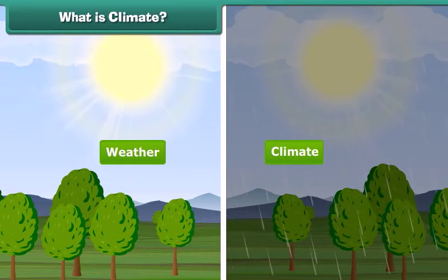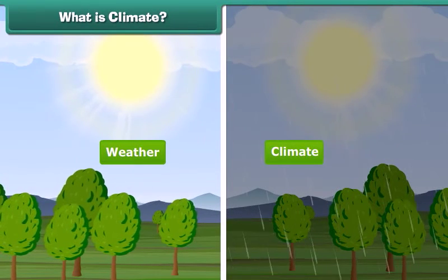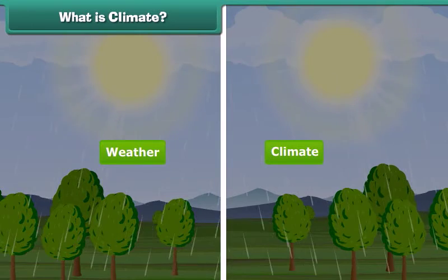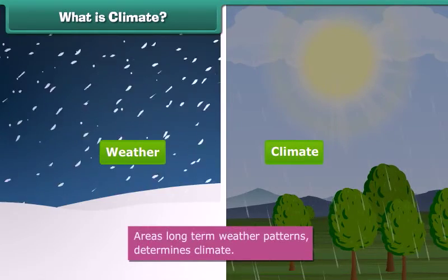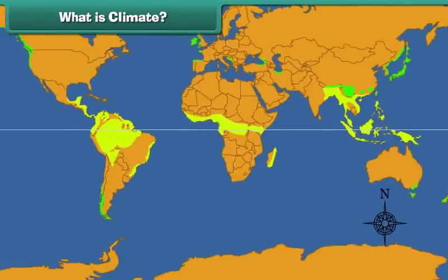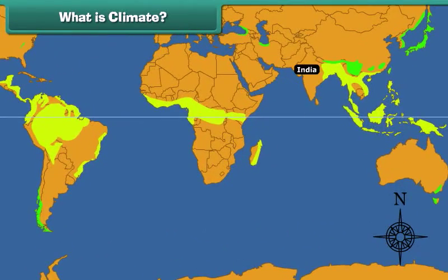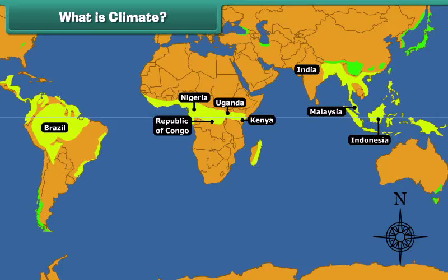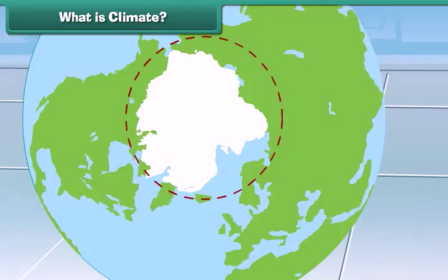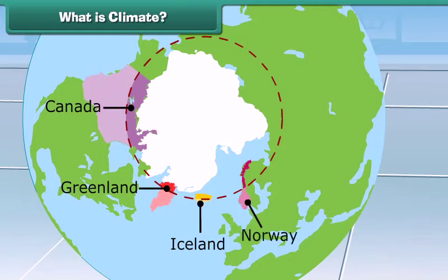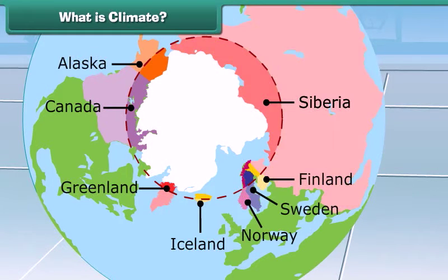Is weather and climate the same? No. An area's long-term weather patterns determine climate. For example, areas near the equator have a warm climate and the areas near the poles have a much colder climate. So children, now you can easily differentiate weather from climate.